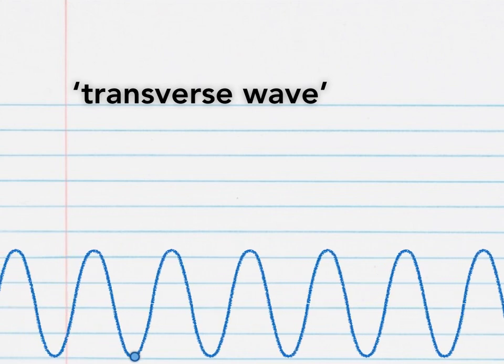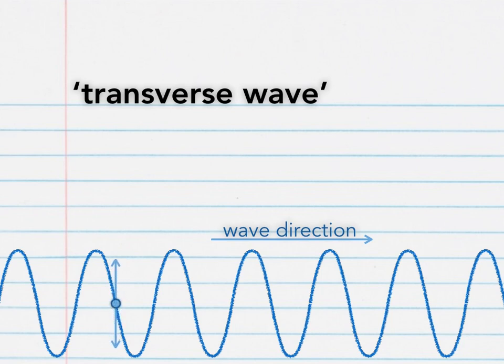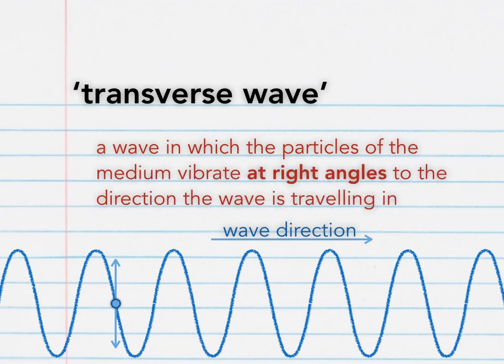As you can see, the wave direction was from left to right, although the motion of the drop of water was up and down. So a transverse wave is a wave in which the particles of the medium, water in this example, vibrate at right angles to the direction the wave is traveling in.